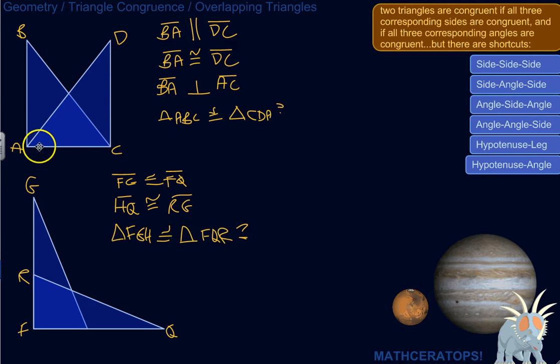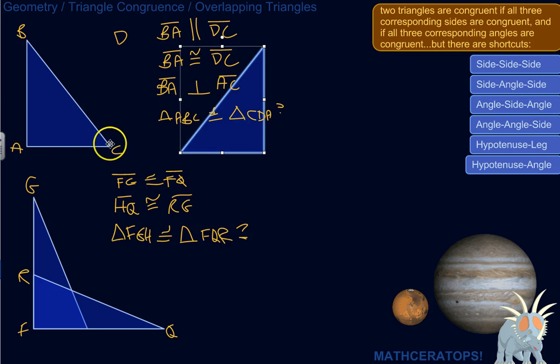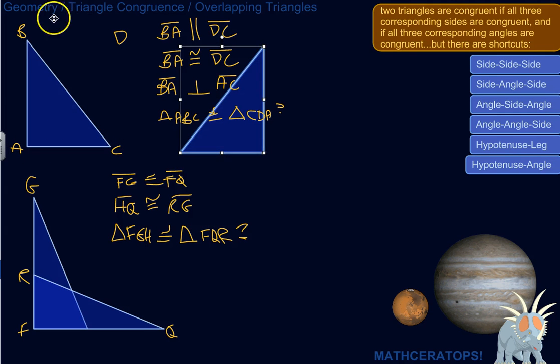They're overlapping in this case because they share this side. AC is a side common to both. So AC is this length and AC is that length there. So that's going to help.